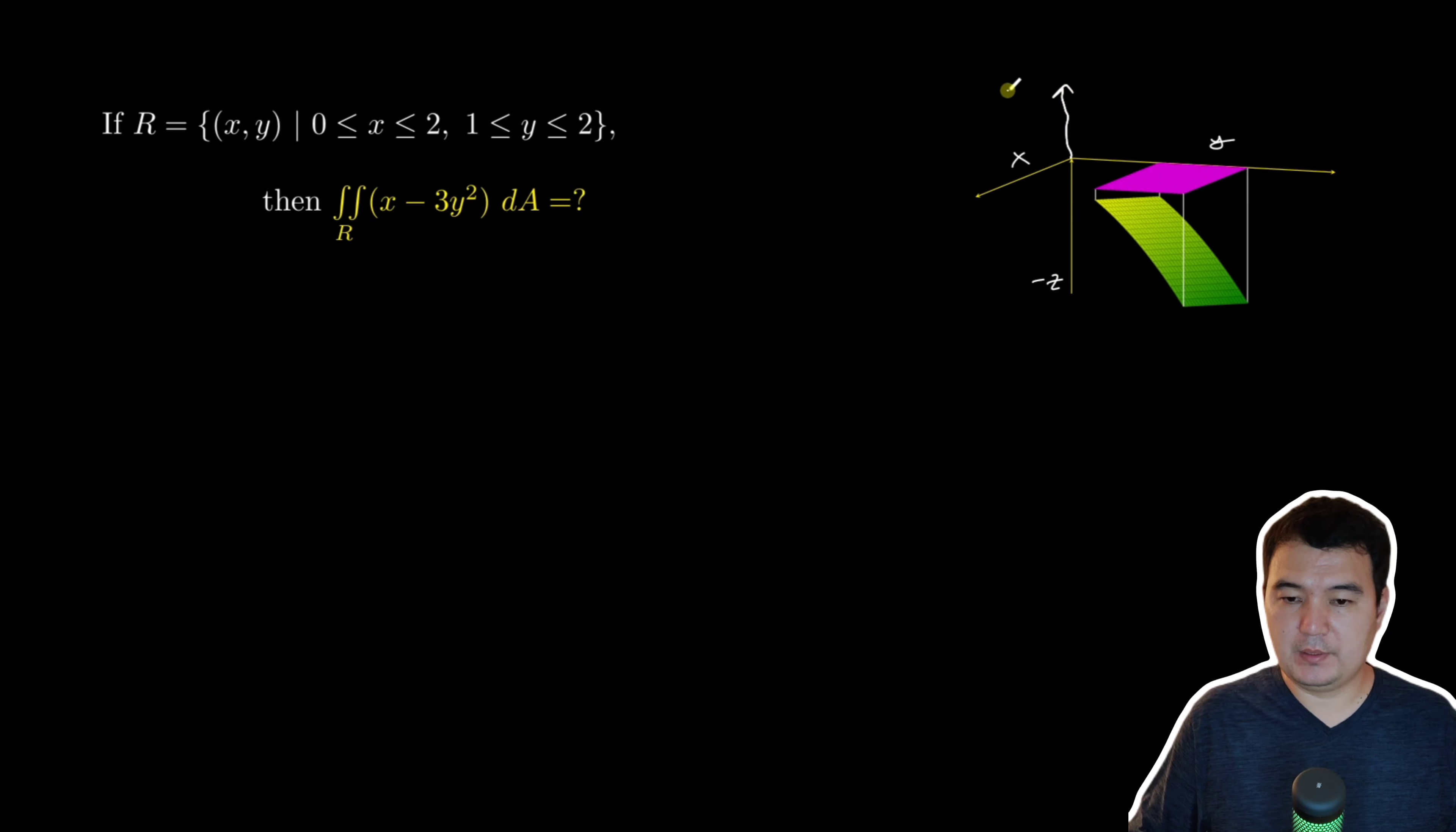So like if you go up here, that's positive z. Which means the result of this integral, we expect the result of this integral to be a negative number.